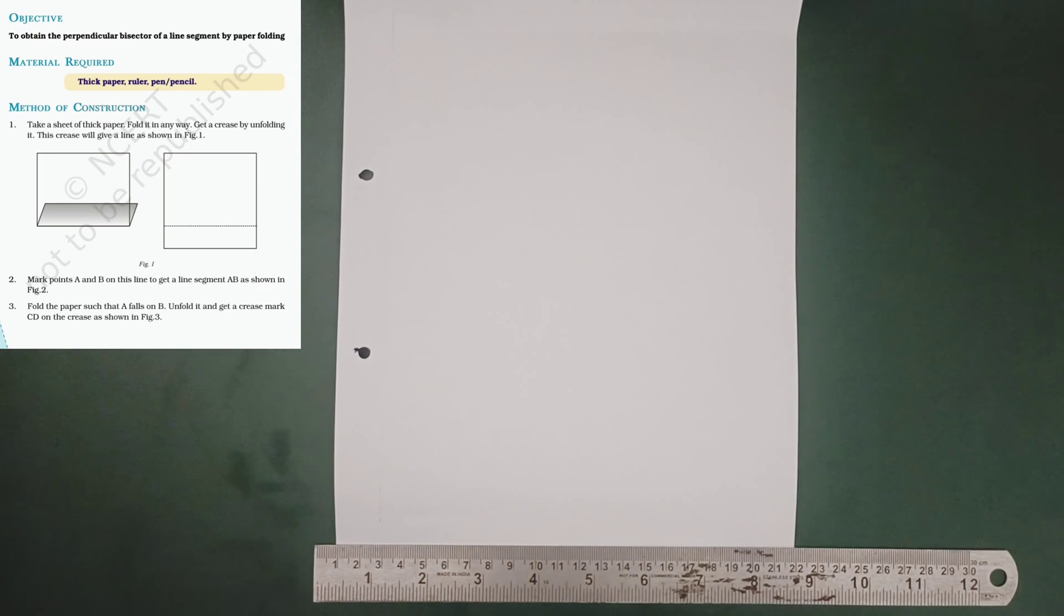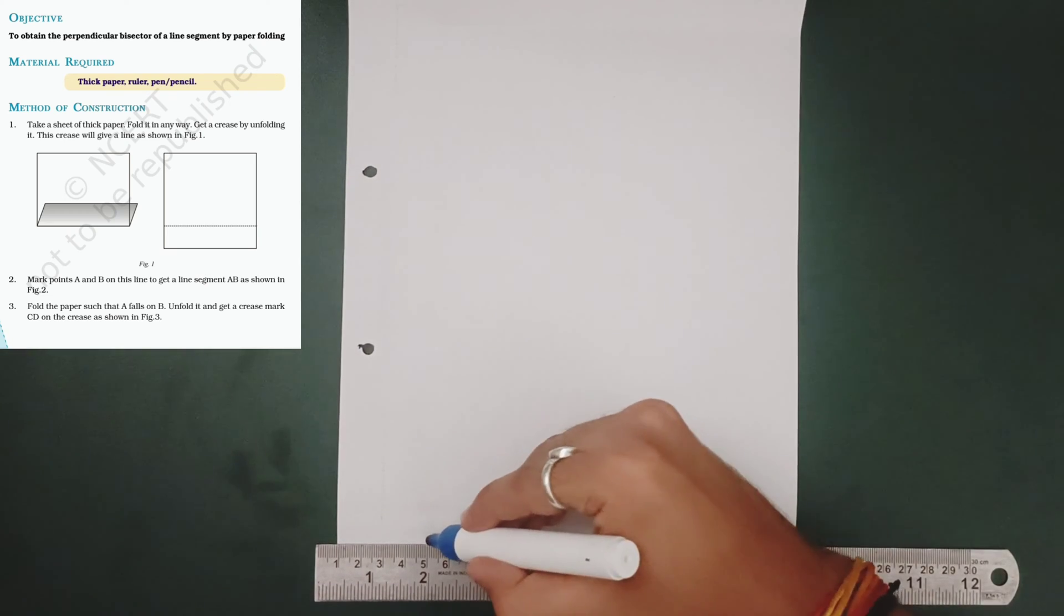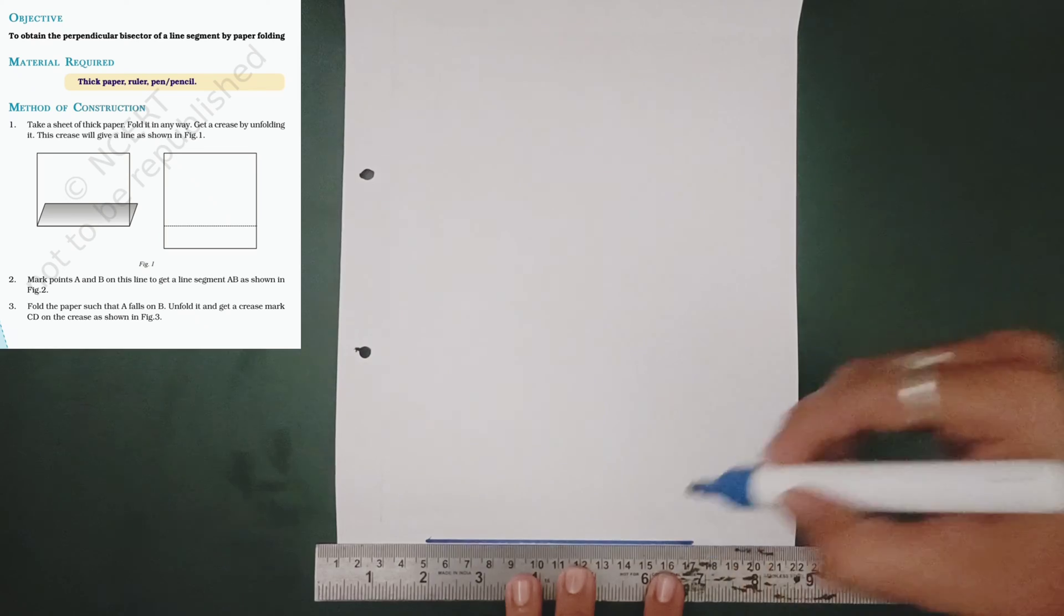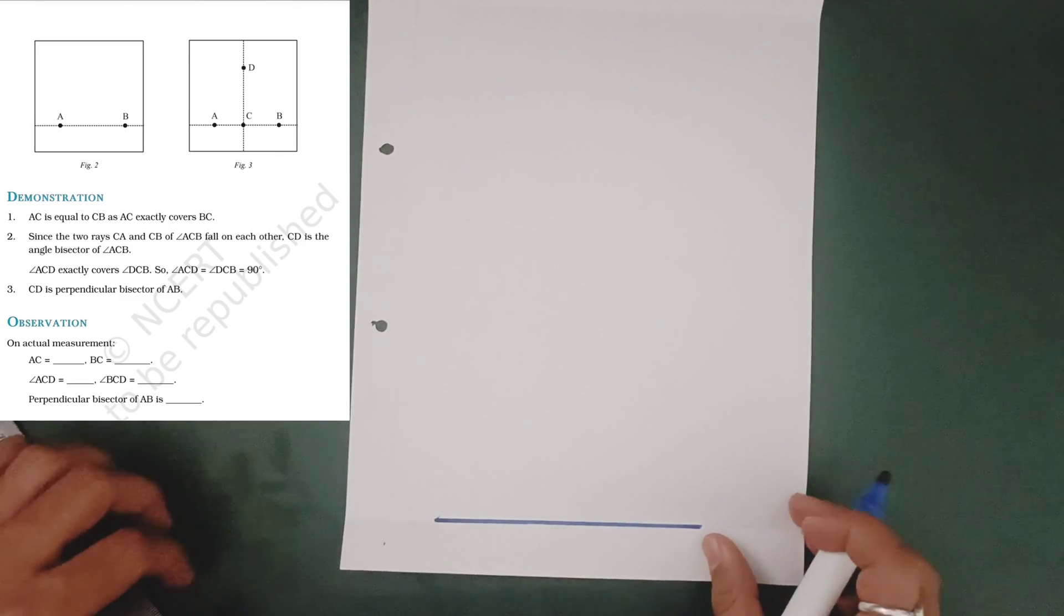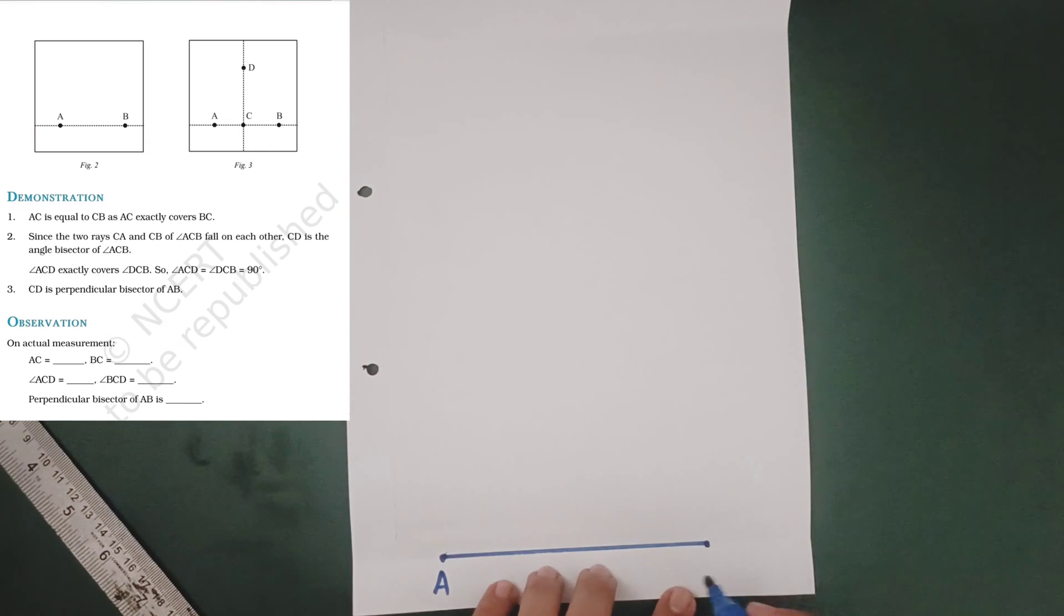Draw a line. Mark the two points as A and B. This is point A, this is point B.